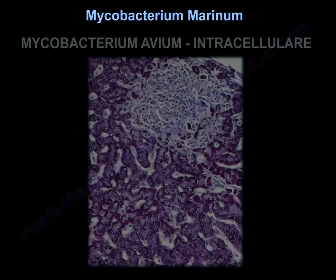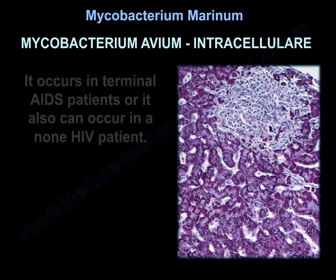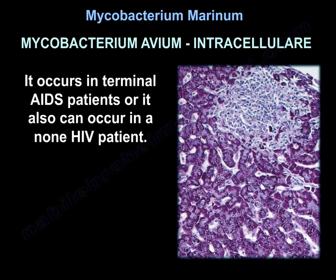Another entity of atypical mycobacterium is called Mycobacterium avium intracellulare. It occurs in terminal AIDS patients, or it can also occur in a non-HIV patient.